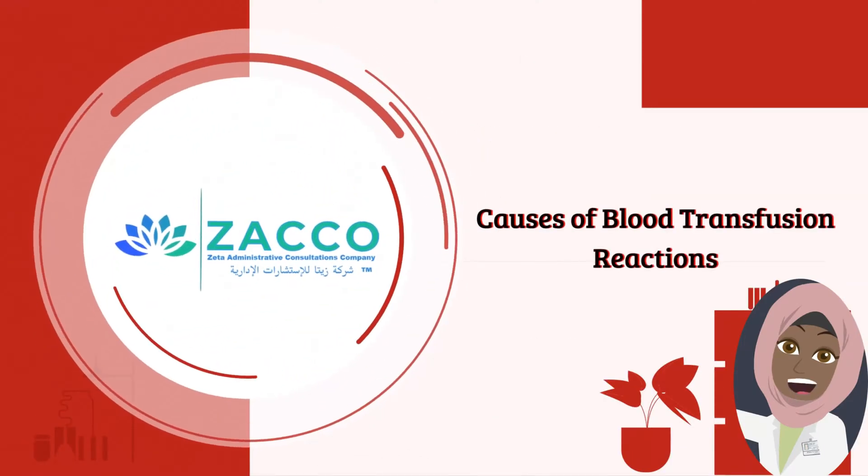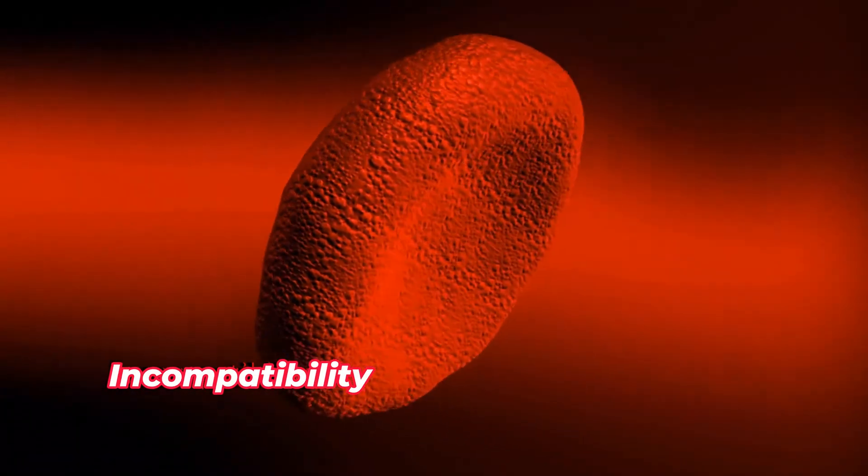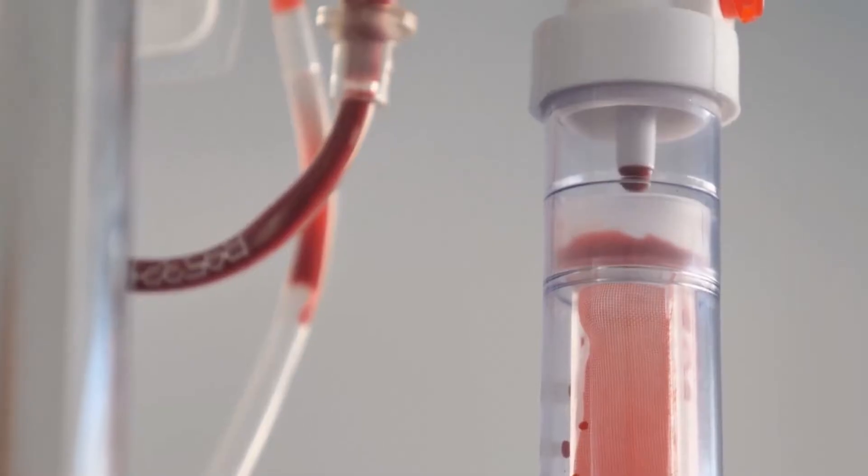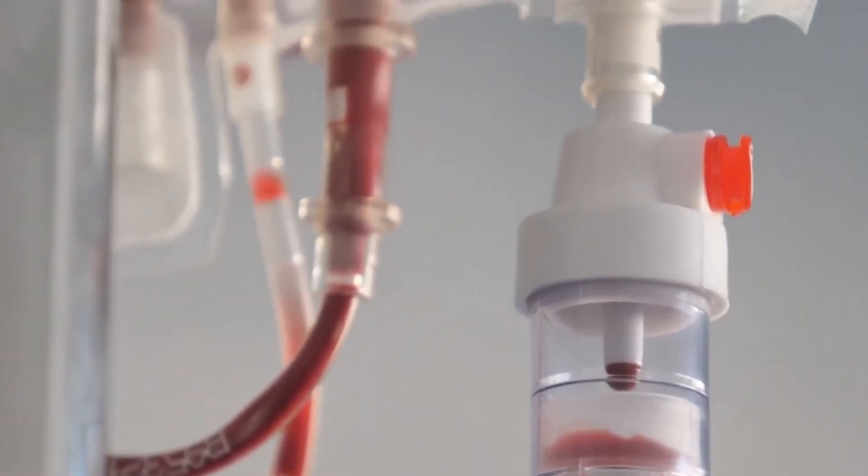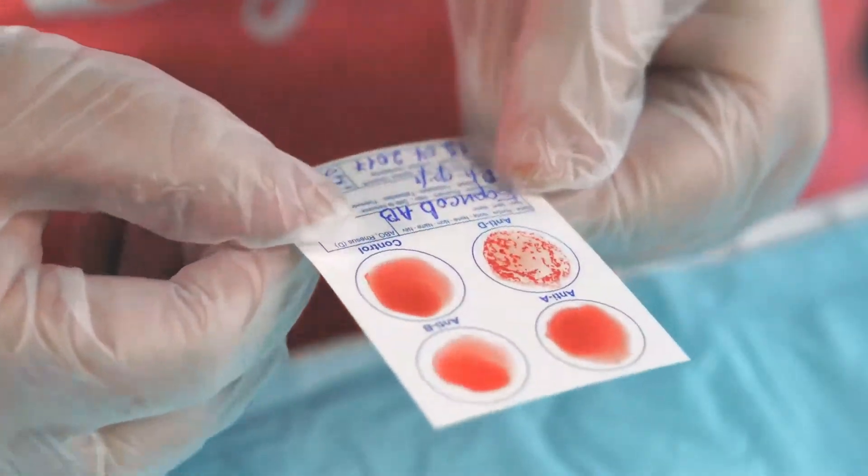One of the causes of blood transfusion reactions is the incompatibility between the recipient's antibodies and the donor's red blood cells. In this case, the recipient's body recognizes the donor's cells as a threat and begins to attack it. Essentially, this is why blood matching and cross-typing are done.